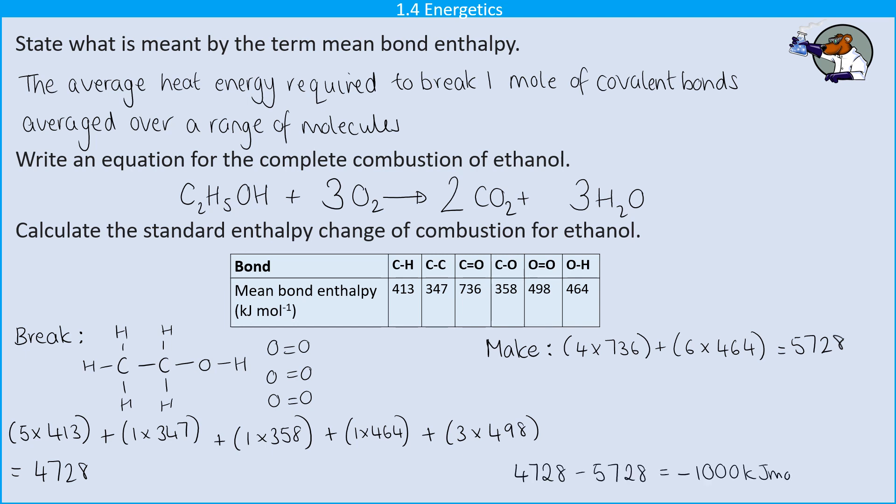And so if I then do that little subtraction, I get minus 1,000 kilojoules per mole. And that does make sense. It's a negative value. So this is an exothermic process. And bearing in mind that we're burning a fuel, of course, it's going to be an exothermic process.